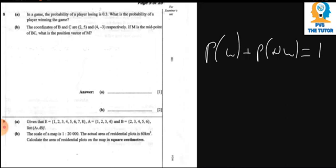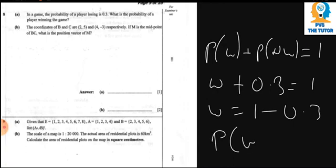Question 8 says: in a game, the probability of a player losing is 0.3. What is the probability of a player winning? We know that probability of winning plus probability of not winning equals 1. So: P(winning) + 0.3 = 1, therefore P(winning) = 1 - 0.3 = 0.7. Probability cannot exceed 1.